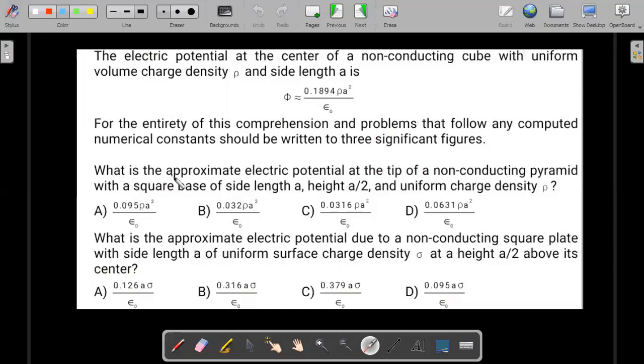Let's go to the first part of the question. What is the approximate electric potential at the tip of a non-conducting pyramid with a square base of side length a, height a/2, and uniform charge density ρ? Then the second question: what is the approximate electric potential due to a non-conducting square plate with side length a of uniform surface charge density σ at height a/2 above its center? You want to give it a try? Just pause the video here, try it out for some time, and then we can go ahead with the solution.